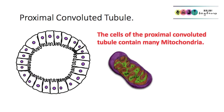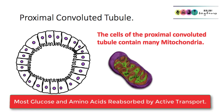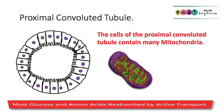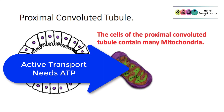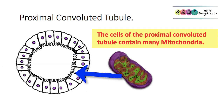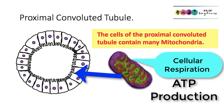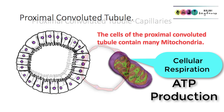Something else to consider is the reabsorption of glucose and amino acids. Most glucose and most amino acids are reabsorbed by means of active transport, which means ATP is needed. Therefore, the cells of the proximal convoluted tubule must contain many mitochondria, because ATP is produced in the mitochondria during cellular respiration.